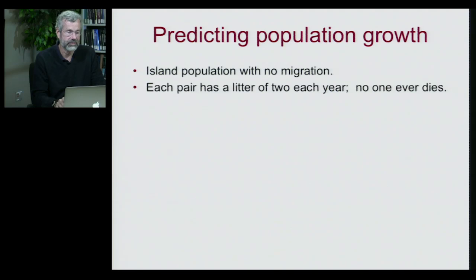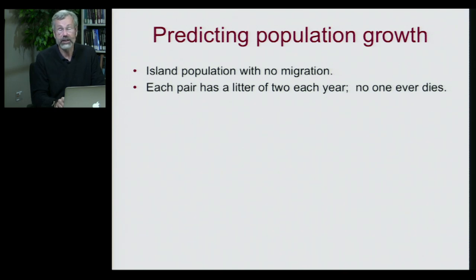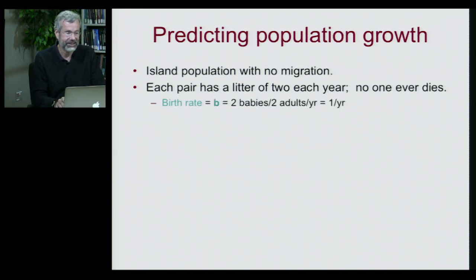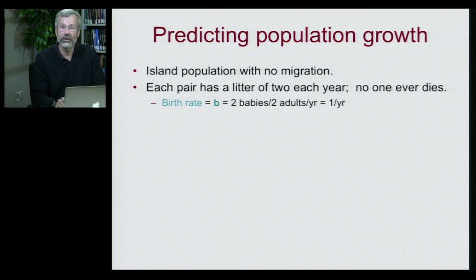On this hypothetical island there's no migration. We'll say our hypothetical species lives in pairs, and each pair has a litter of two babies each year, and it's a wonderful place to live because no one ever dies. So our birth rate B is two babies per two adults — that's one per year, per individual in the population.